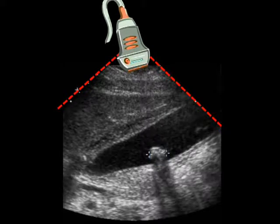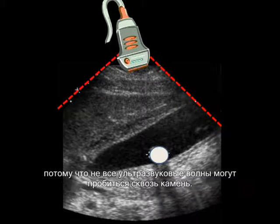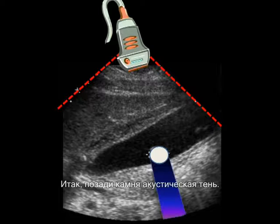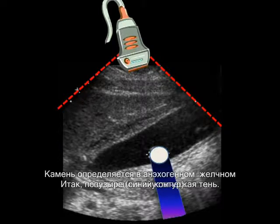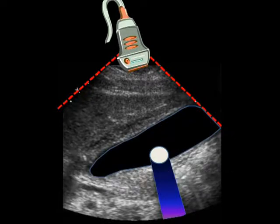The gallstone also creates an acoustic shadow, because none of the sound waves are able to penetrate and pass through the stone. So, distal to the stone, there is acoustic shadowing. And the gallstone is within the sonolucent, or echolucent, or anechoic gallbladder, which is fluid filled.